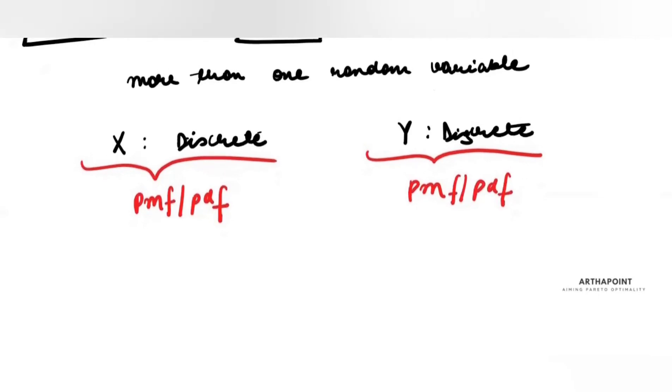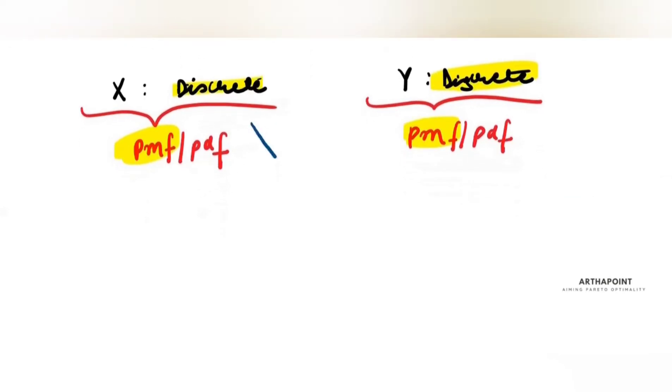For now, I'm assuming probability mass function because I've written it as discrete. And now, I want to club them together. Club them together means I want to find the probability that X will be a certain number and Y will be a certain number.